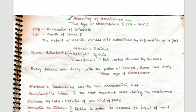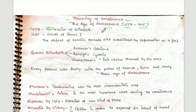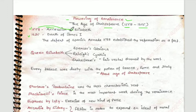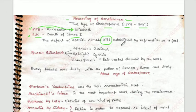The Flowering of the Renaissance — this period is also called the Age of Shakespeare. It was between 1558 and 1625. 1558 was the time of the accession of Elizabeth, when she accessed the throne, and 1625 was the death of James the First. The defeat of the Spanish Armada in 1588 is also frequently asked.